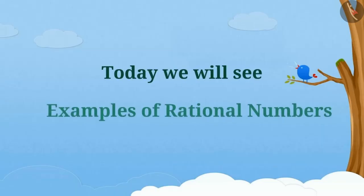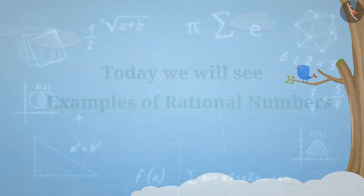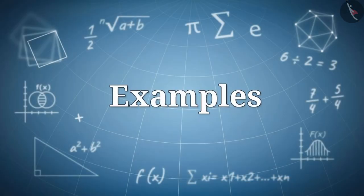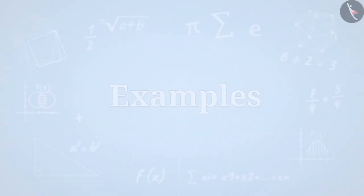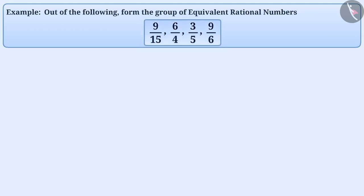Today we will see some examples of rational numbers. Out of the following, form the group of equivalent rational numbers. The easiest way to find equivalent rational numbers is to represent them in their standard form, like we represent fractions in their simplest form.